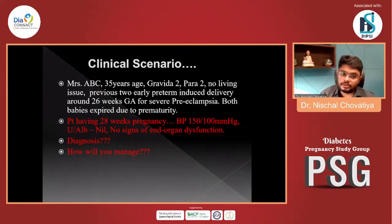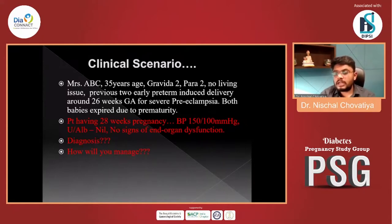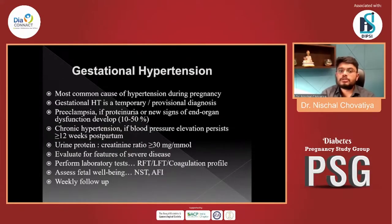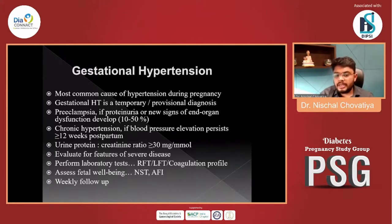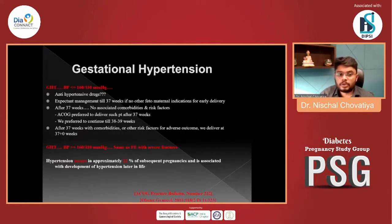Case 2: Mrs. ABC, 35 years, gravida 2 para 2, no living issues, previous two early preterm deliveries at 26 weeks for severe preeclampsia. Now at 28 weeks of pregnancy, blood pressure is 150/100, urinary albumin is nil, and no signs of end-organ damage. Diagnosis: gestational hypertension. This is the most common cause of hypertension during pregnancy; it is temporary and a provisional diagnosis. If proteinuria or end-organ damage develops, it becomes preeclampsia. Weekly follow-up, evaluate for severe features, and assess fetal well-being are necessary.